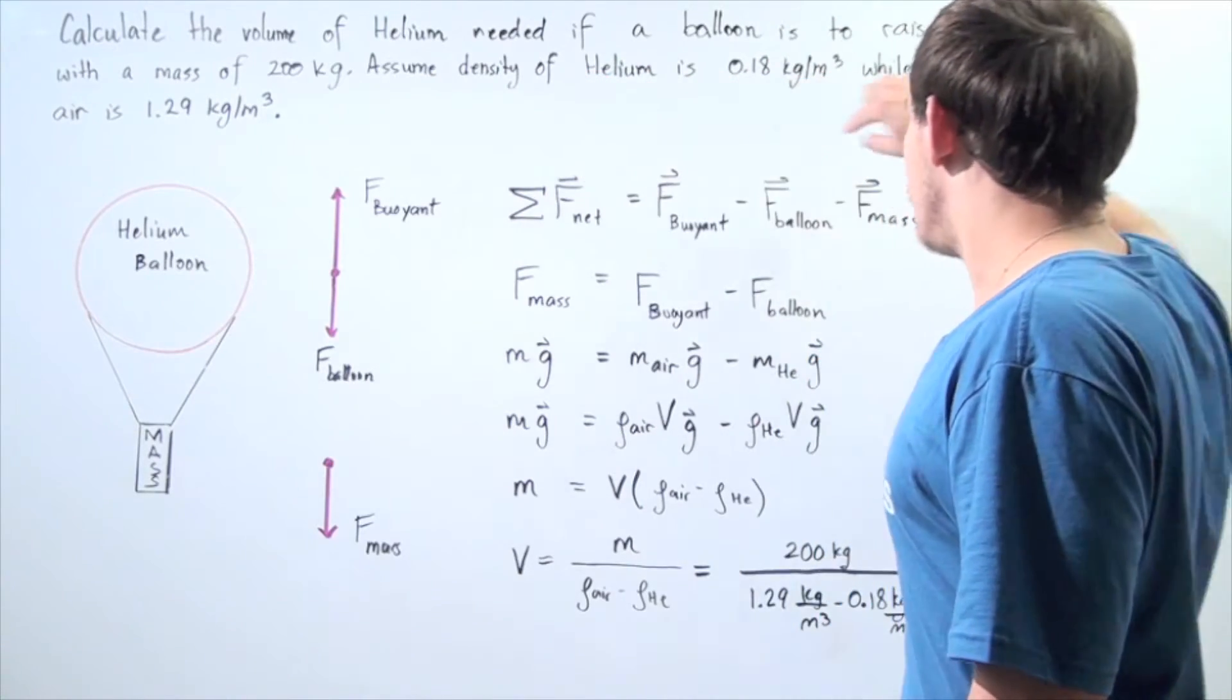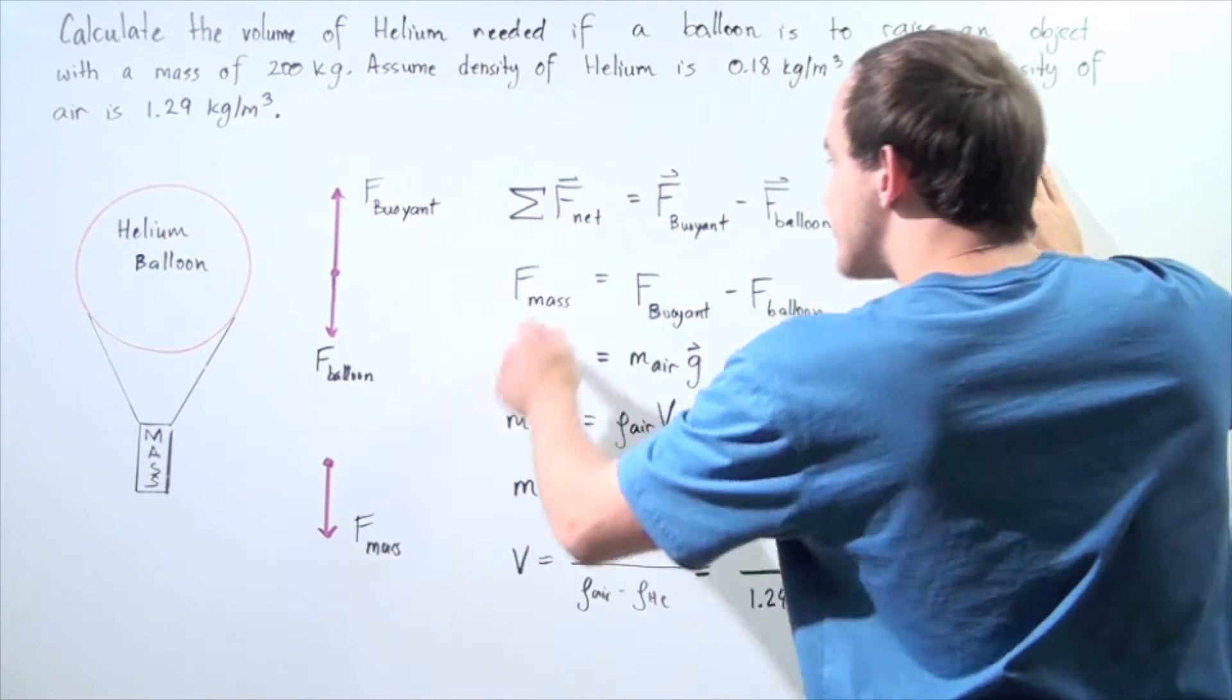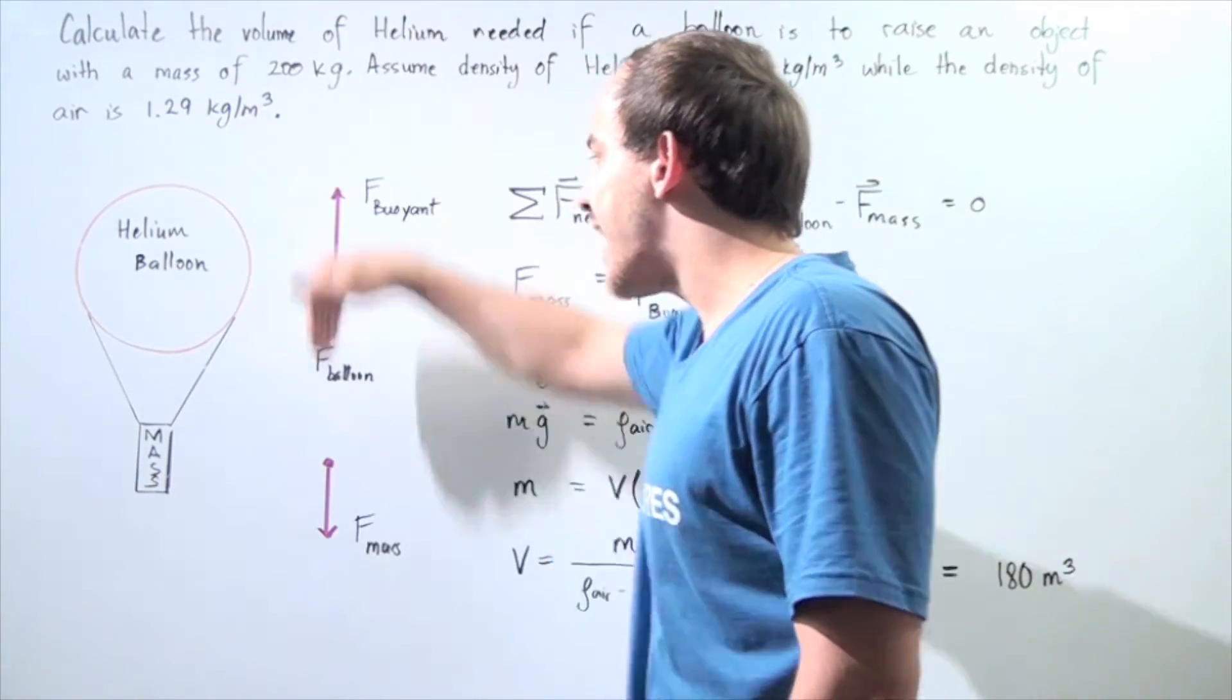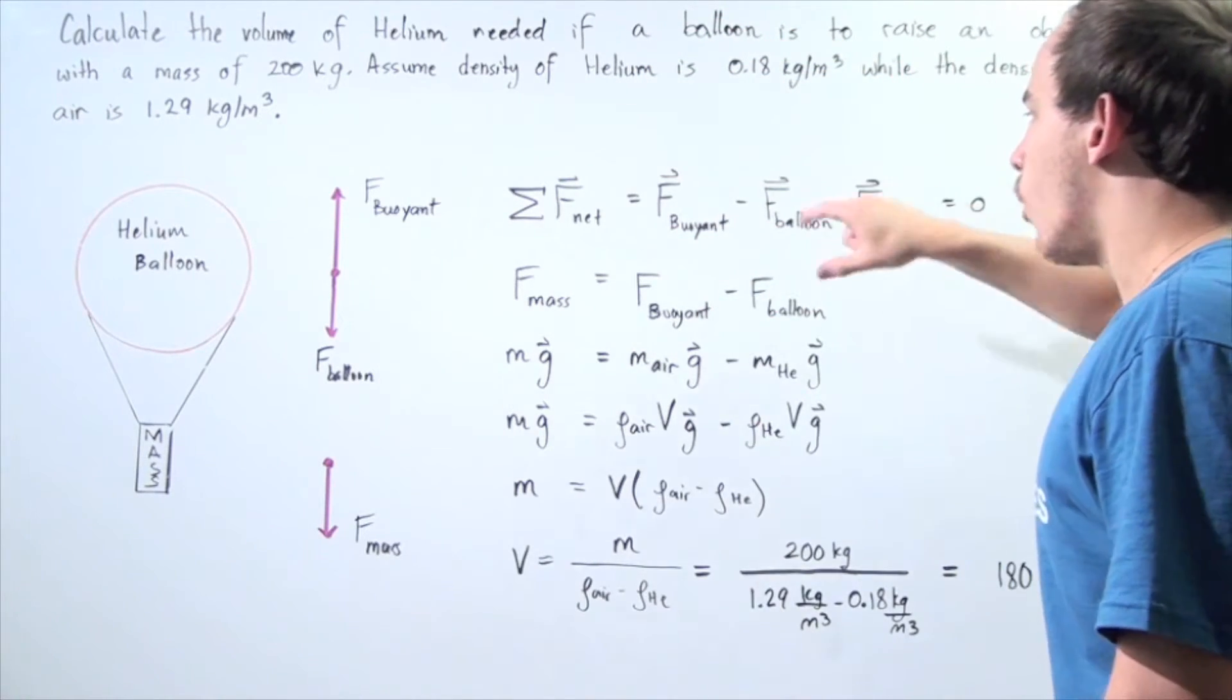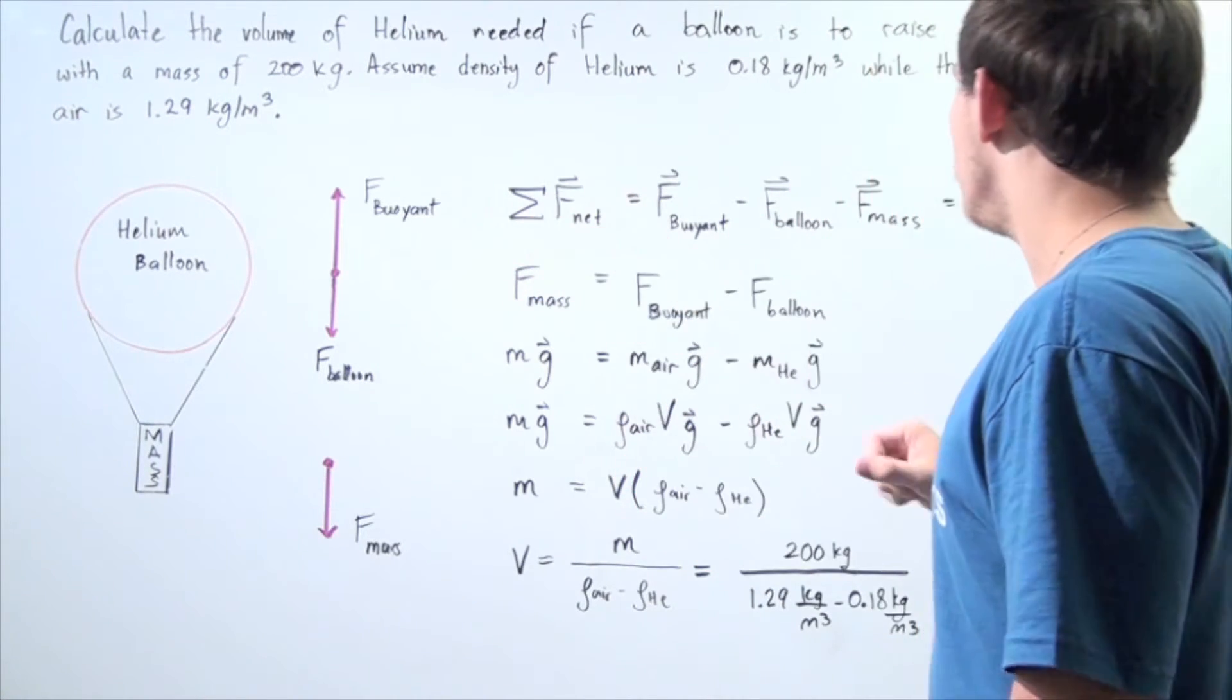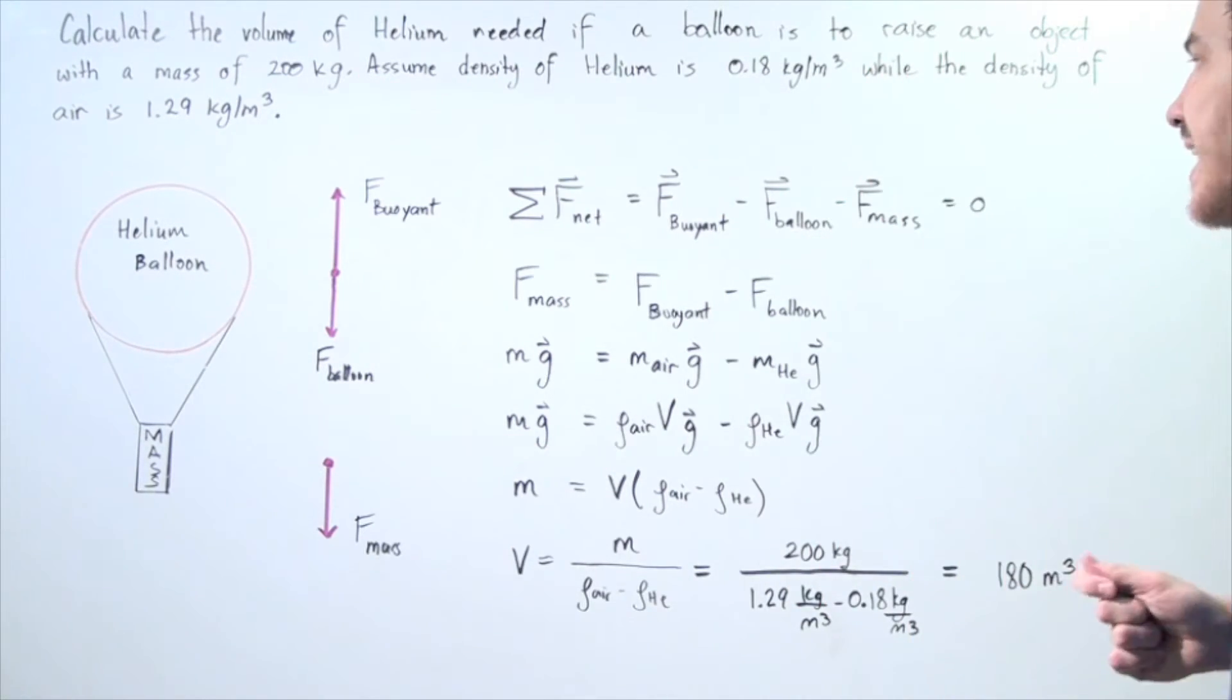And that's exactly what we write in the following equation. The sum or the net force acting along the y-axis is equal to zero. We choose upward to be positive and downward to be negative. So we have the buoyant force minus the gravitational force acting on the mass of the balloon minus the gravitational force acting on our mass of 200 kilograms.